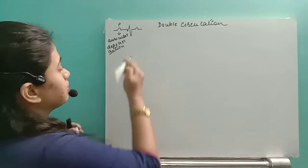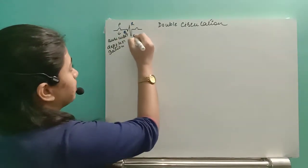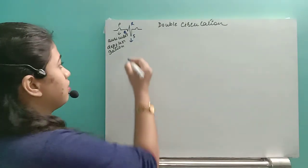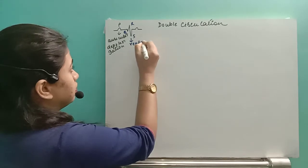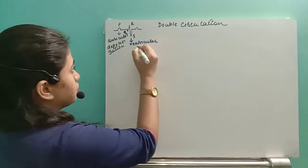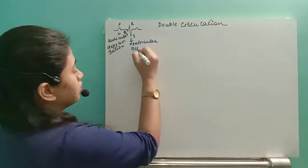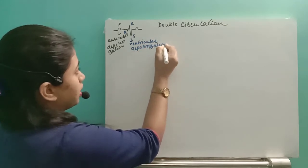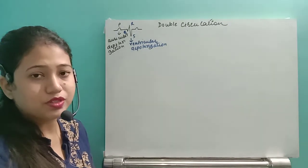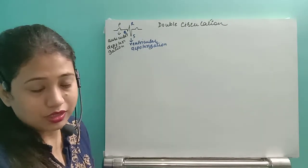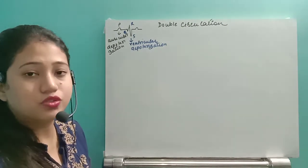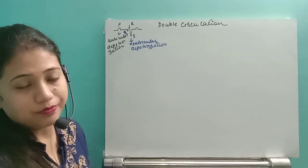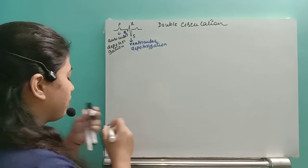Next, the QRS complex indicates ventricular depolarization. In ventricular depolarization, both the two ventricles will contract, and then the blood from both ventricles will go to the pulmonary artery and the systemic artery.